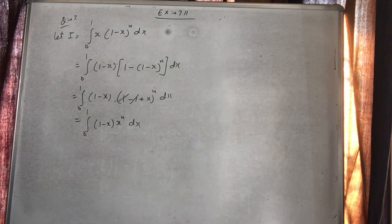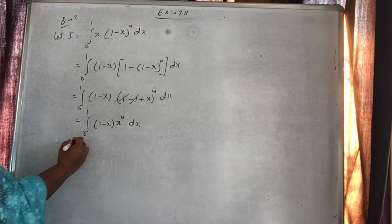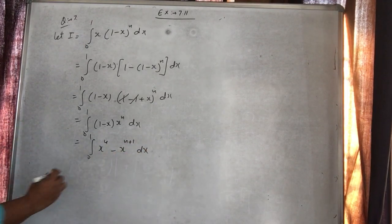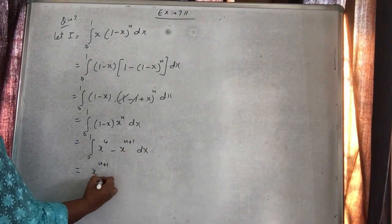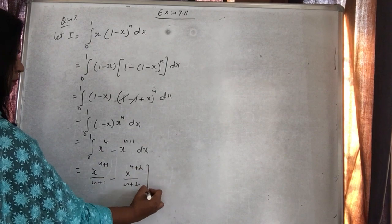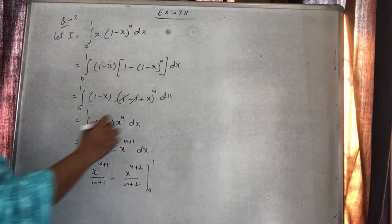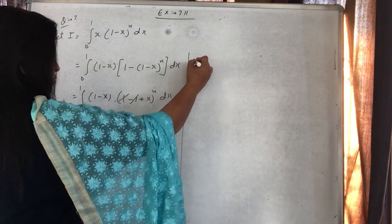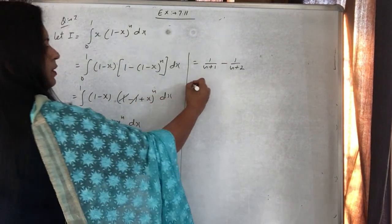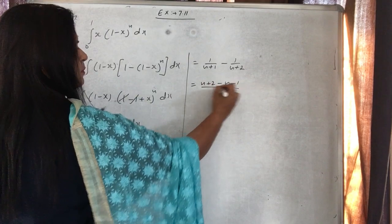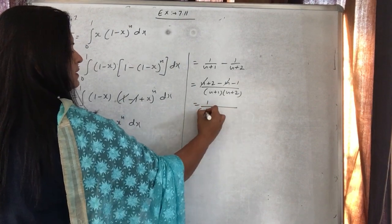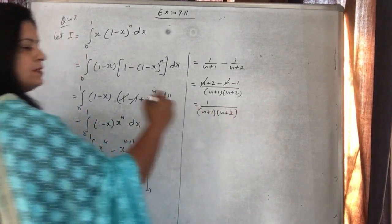Lekin direct integrate ho raha hai — x raise to power n se multiply karke: x^(n+1) upon (n+1) minus x^(n+2) upon (n+2), limit 0 to 1. Upper limit x = 1: 1/(n+1) minus 1/(n+2). Lower limit x = 0: 0. LCM lein — n se n cut ho jaata hai. Answer is 1 upon (n+1) into (n+2).